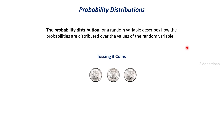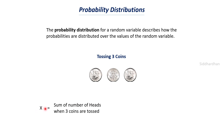Let's say we are tossing three coins. Let x be the random variable, where x is the sum of the number of heads when three coins are tossed. So if we get one head and two tails, the random variable value will be 1. If we get two heads, the value will be 2. If we get three heads, the value will be 3. And if all coins are tails, the random variable value will be 0.